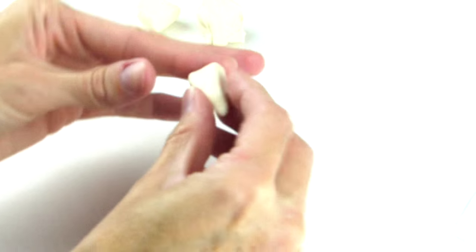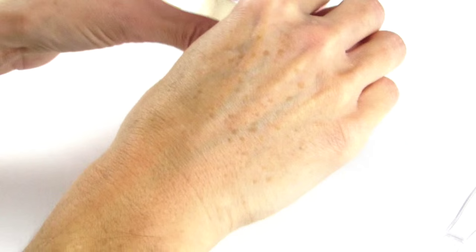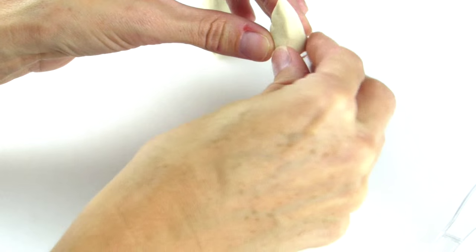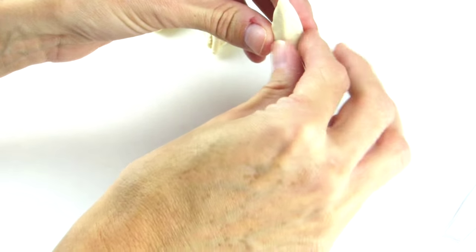Once you have the shape that you would like, grab the top of the container and just start melding it around the container.